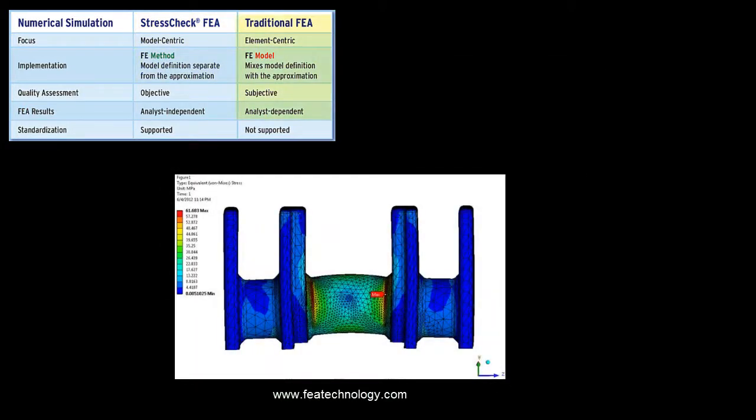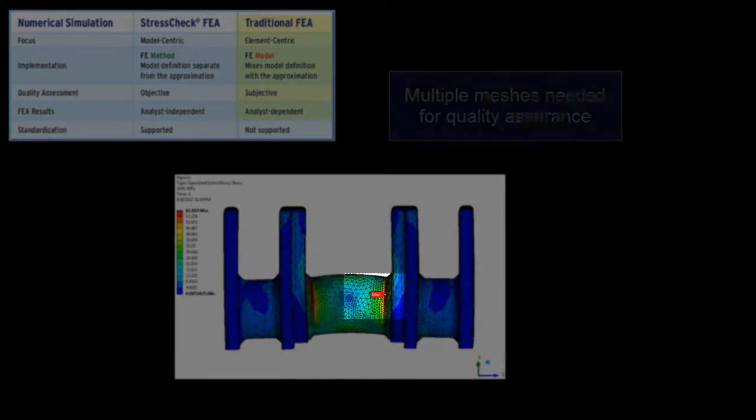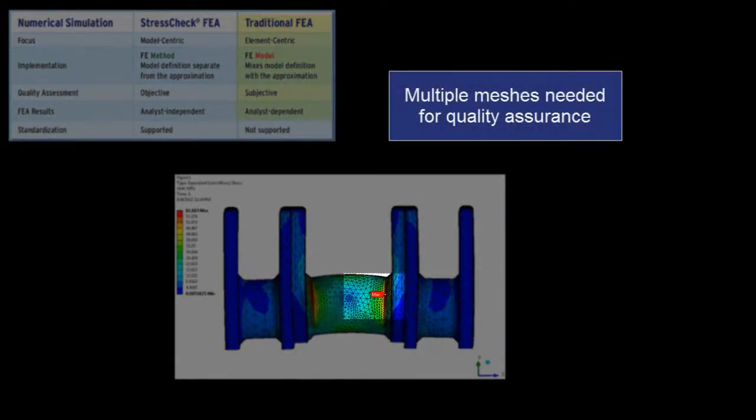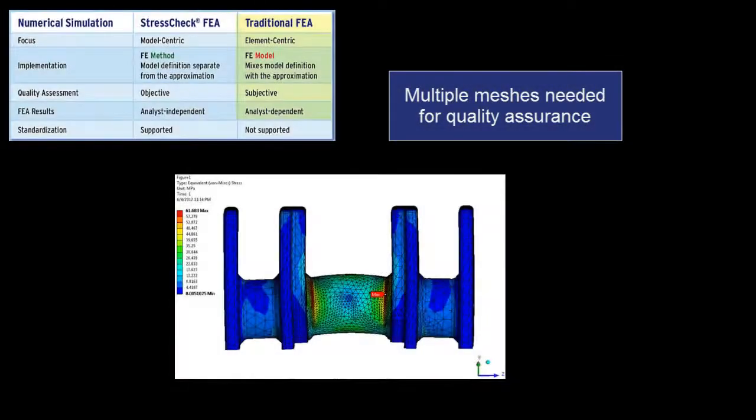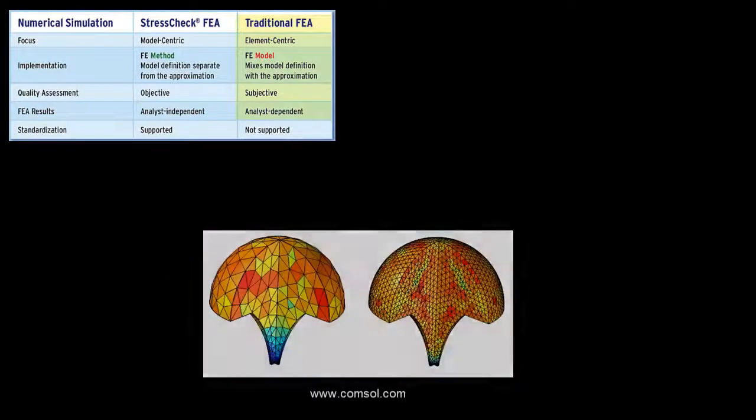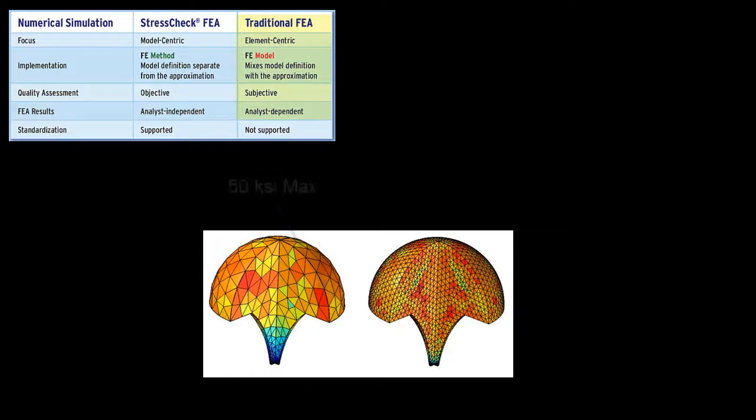Quality assurance in typical FEA packages is very limited, with only one result available for a given mesh. This means that an engineer has little feedback as to the reliability of the results. What happens if I modify the mesh? Does the answer change from 50 KSI to 80 KSI? How do I know for sure?